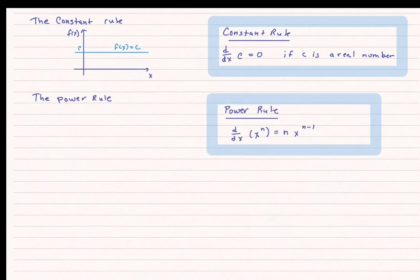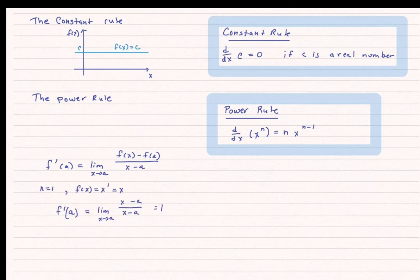The next rule we're going to talk about is the power rule. I'm not going to do a lot of proofs, but I am going to do this first one. The power rule states that if I take the derivative of a variable x raised to the nth power, that's equal to n times x to the n minus 1 power. Let's prove this. I'm going to start with the formal definition and take the derivative of x — that is x to the first power. So if I let n equal 1, then f(x) equals x.